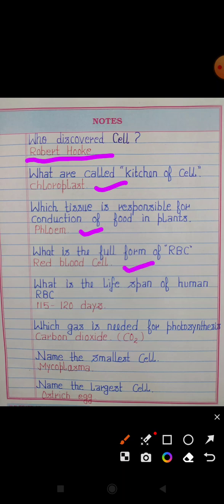What is the life span of human RBC? Answer: 115 to 120 days. Which gas is needed for photosynthesis? Answer: Carbon dioxide, formula CO2.